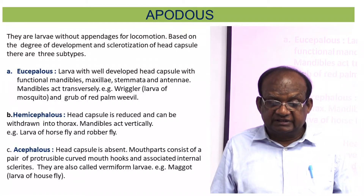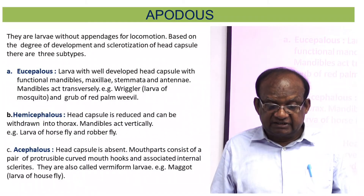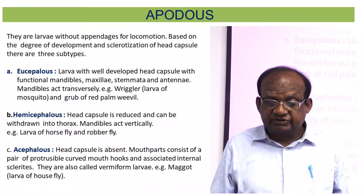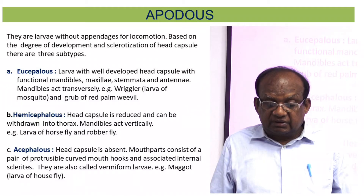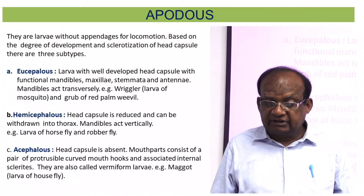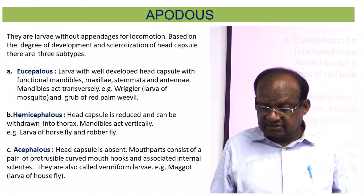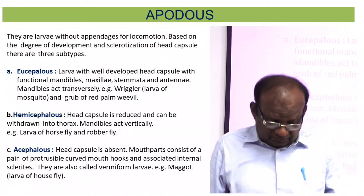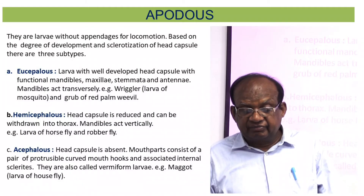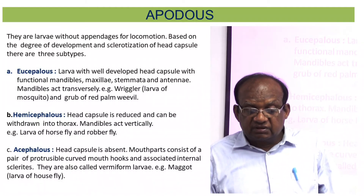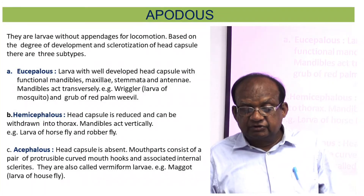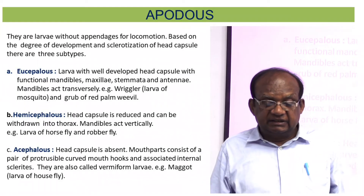The first category of apodous larvae is eucephalous. These have functional mandibles, functional maxillae, stemmata, and antennae; mandibles act transversely. Examples include the larva of regular flies (Musca), grub of red palm weevil, and larva of mosquito.